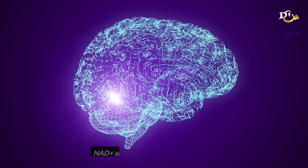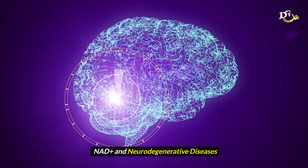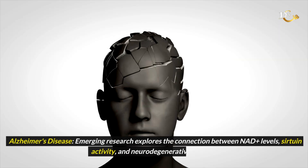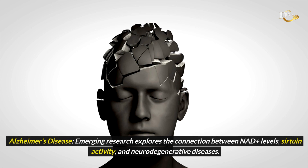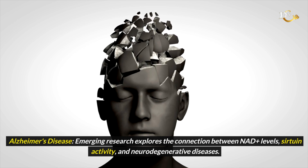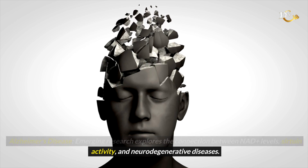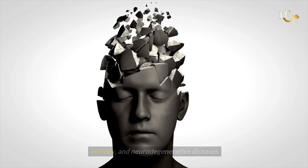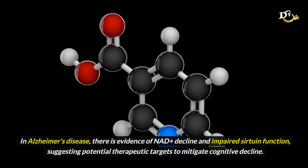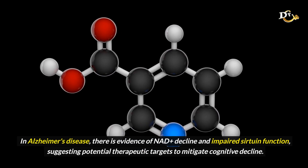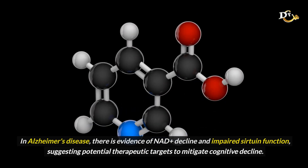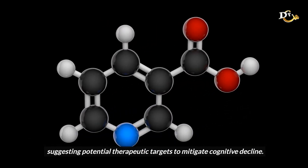Emerging research explores the connection between NAD levels, sirtuin activity, and neurodegenerative diseases. In Alzheimer's disease, there is evidence of NAD decline and impaired sirtuin function, suggesting potential therapeutic targets to mitigate cognitive decline.